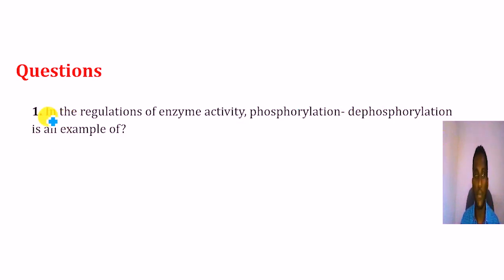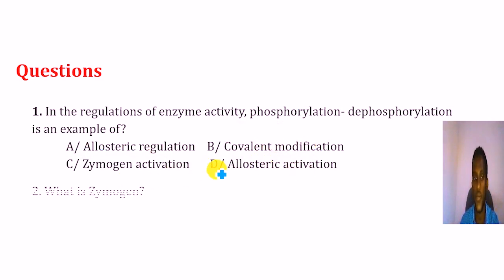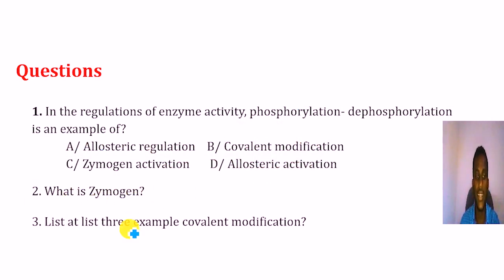Question number one: In the regulation of enzyme activity, phosphorylation and dephosphorylation is an example of — A. Allosteric regulation, B. Covalent modification, C. Zymogen activation, D. Allosteric activation. Question two: What is zymogen? Define it. Question three: List at least three examples of covalent modification.